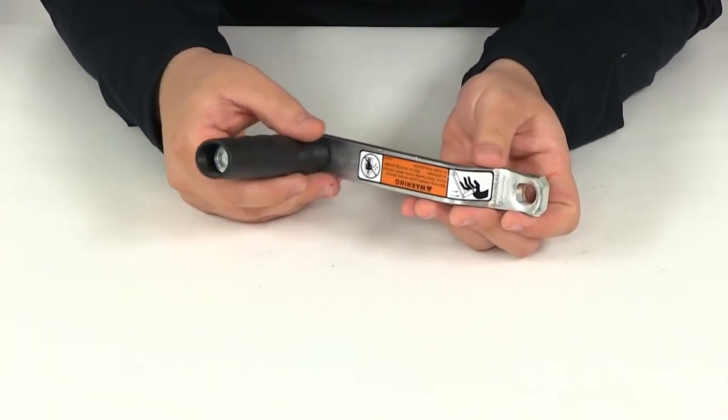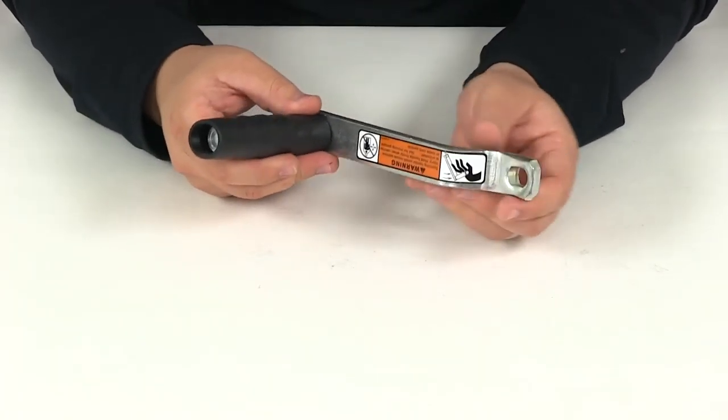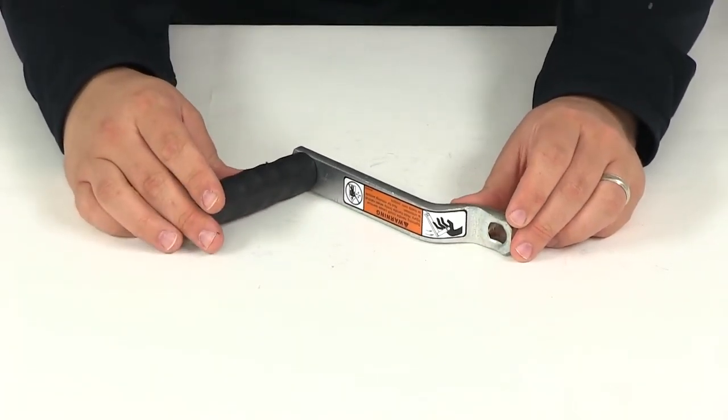That's going to do it for today's review of part number DL5144639. This is the Dutton-Lanson replacement handle for Dutton-Lanson winches.